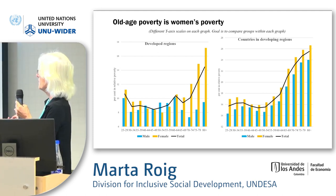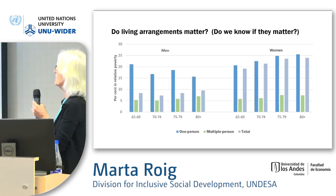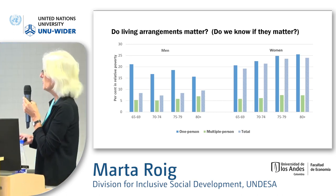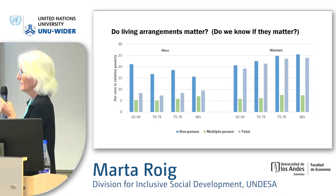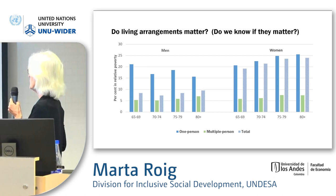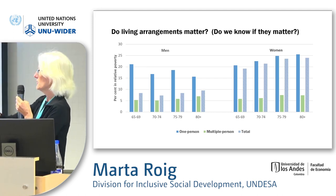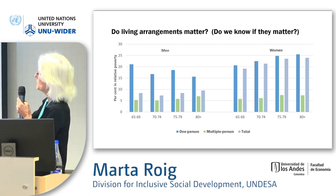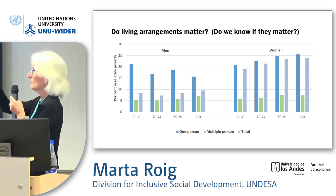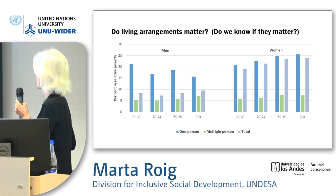Living alone matters. Old-age poverty is higher than adult poverty mainly because older people live more often alone than working-age adults, and that is especially the case for women. There is a self-reinforcing effect: one-person households being poorer, and women's poverty being higher because they live alone more often — a self-reinforcing channel.